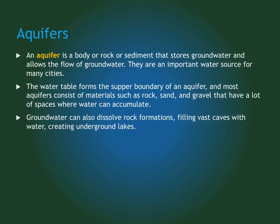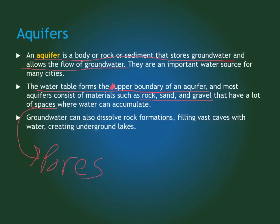If you have a large body of rocks and sediment that can store groundwater, that's called an aquifer. It stores groundwater and allows its flow, and most of the water we use comes from aquifers. The top part of the aquifer is the water table — the upper boundary of the aquifer. Most aquifers consist of rocks, sand, and gravel with lots of spaces or pores where water can accumulate. Water can also dissolve certain rocks like limestone, cutting out caves or huge underground areas and underground lakes where the rocks have dissolved away.